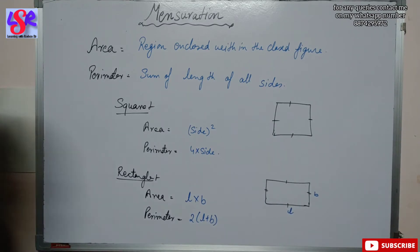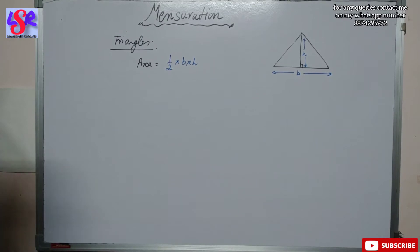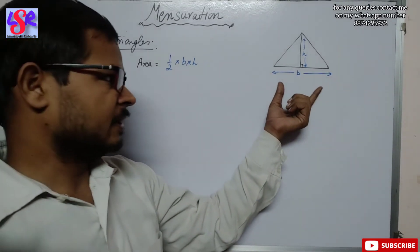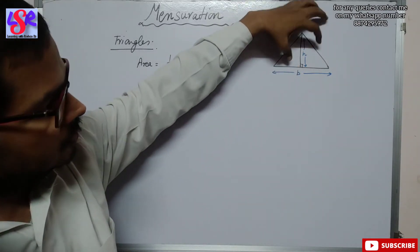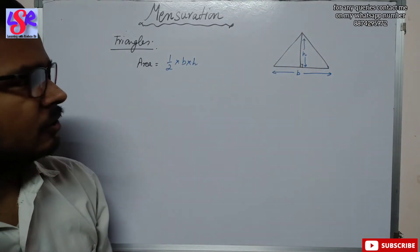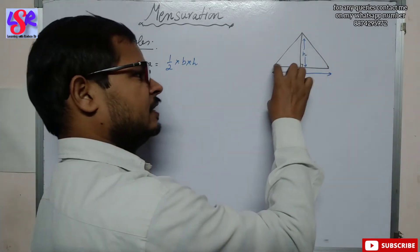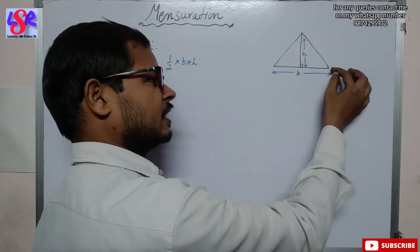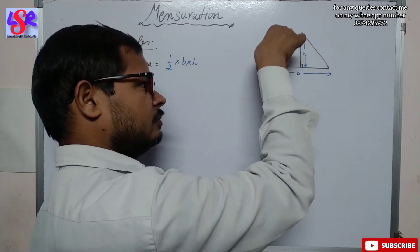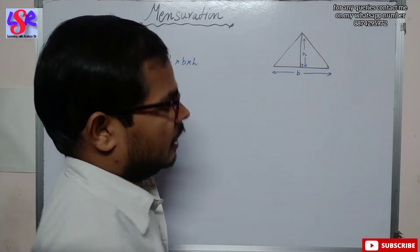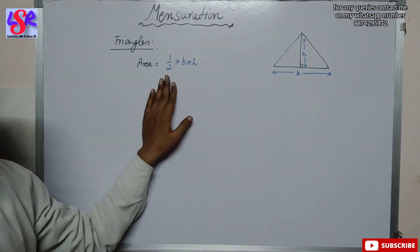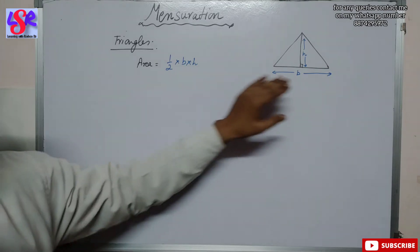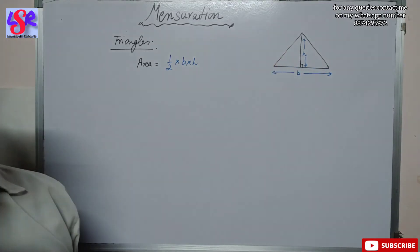The next shape is the triangle. The area of a triangle is 1/2 times base into height, where the base is one side and the perpendicular from the opposite vertex to that base is the height. We can choose any side as the base, with its corresponding height, and the formula gives the same area.